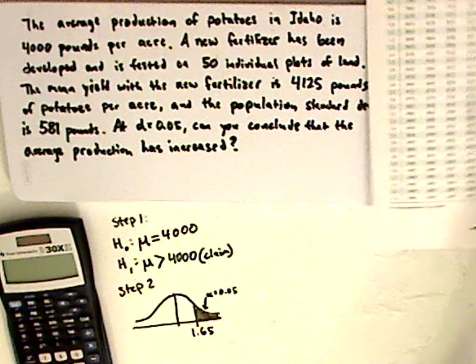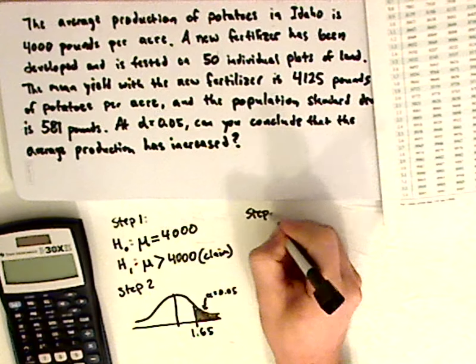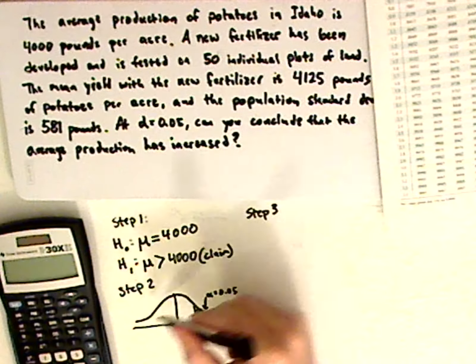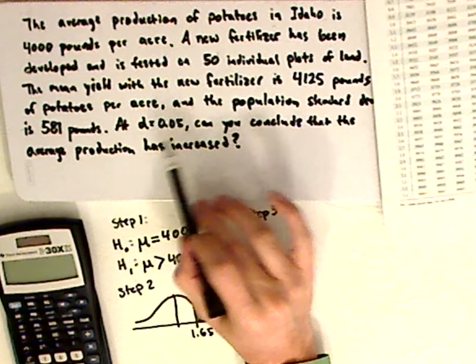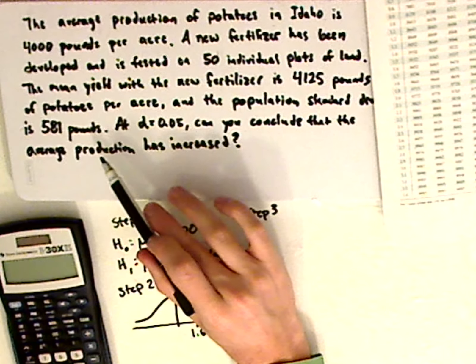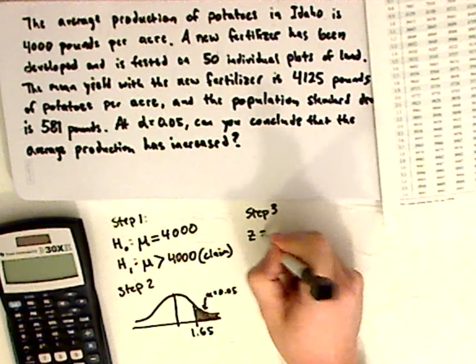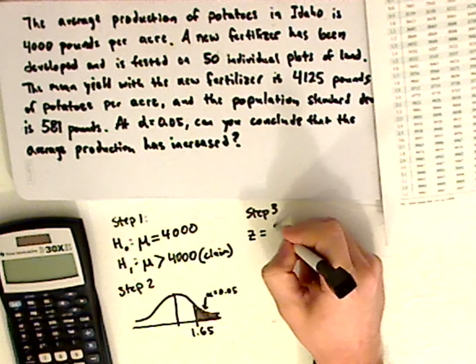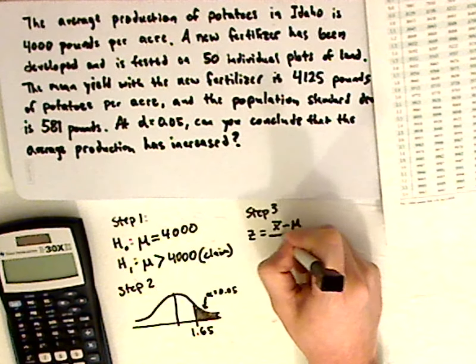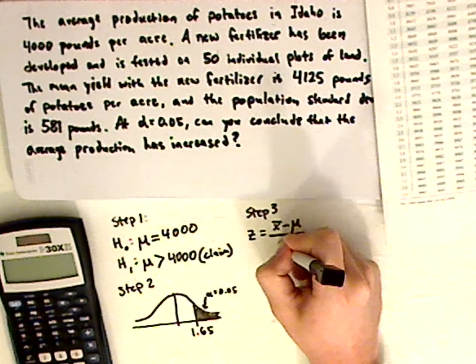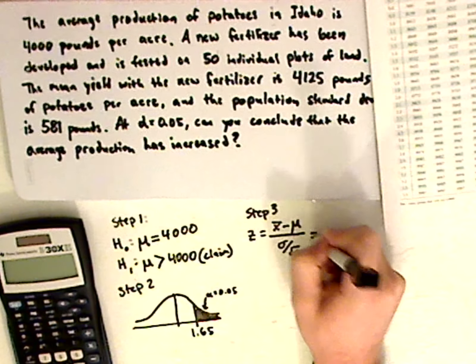Step number three is you got your test statistic. Here, since I'm using a z-table, and it's mean, and I'm also given the standard deviation of the population, that means I can use a z-score. So z equals x-bar minus mu over standard deviation divided by the square root of n.